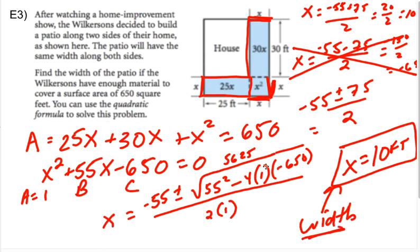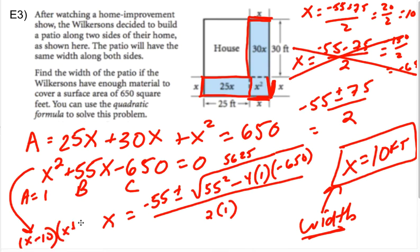You could have also figured this out by factoring. Anytime the quadratic formula gives nice integer or rational numbers with no remaining roots, it means you could have solved by factoring. Sure enough, this factors as (x - 10)(x + 65), giving the two answers x = 10 and x = -65, where 10 is the only logical answer in a word problem about width.